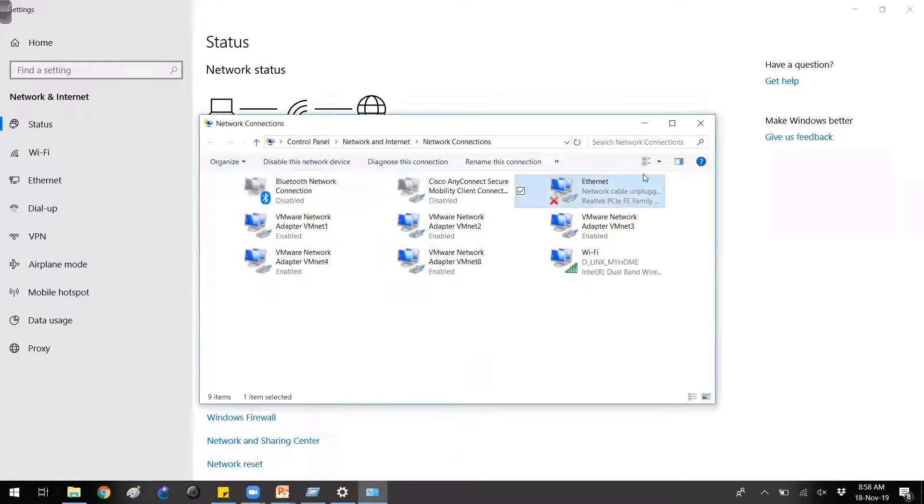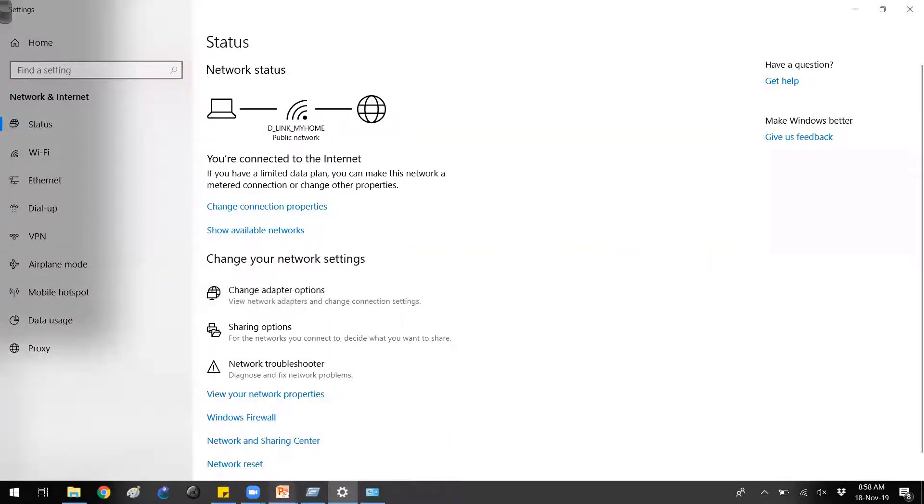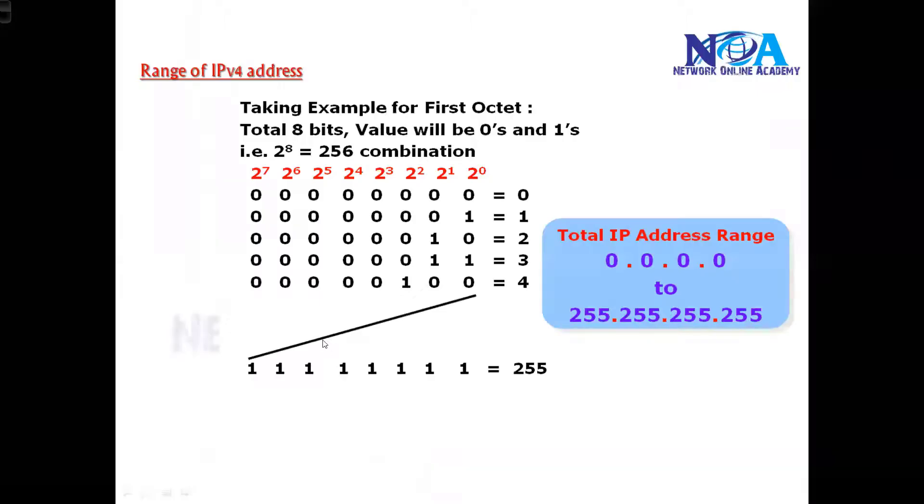The range of addresses is always 255, so you cannot go beyond that. That is the default range of IP addresses. So all zeros, and the last address will be all 255.